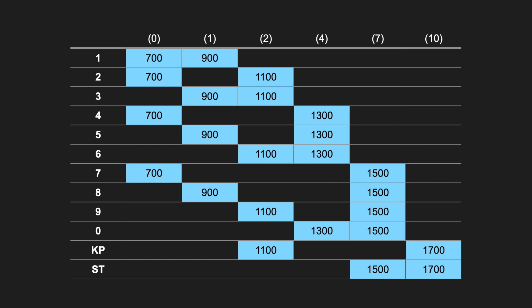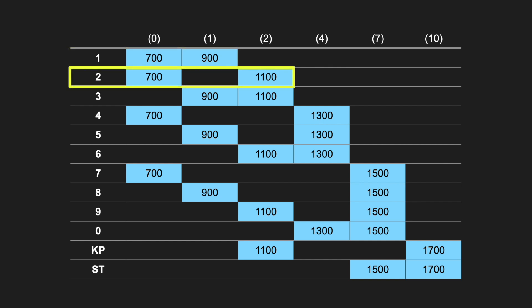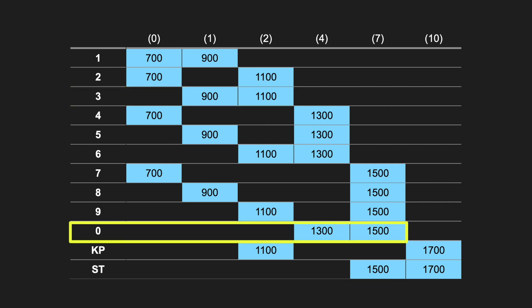A digit is signaled by combining two tones in a particular fashion, known as 2 out of 6 encoding. Because only specific pairs of tones are allowed in the 2 out of 6 system, other combinations can be easily rejected. To signal the digit 1, we use the tones for 0 and 1. To signal a 2, we use 0 and 2. And to signal a 3, we use 1 and 2. This pattern continues all the way until we reach 0. Because there is no other way to signal a 0 using two of the available numerical values, we instead send a 0 by transmitting a 4 and a 7.